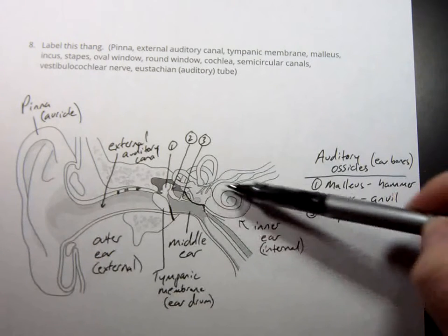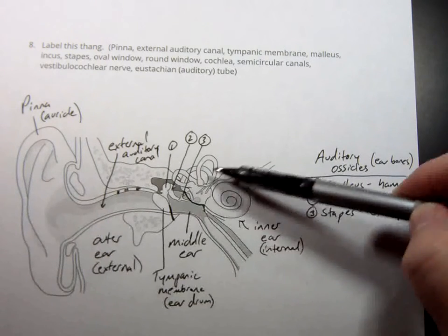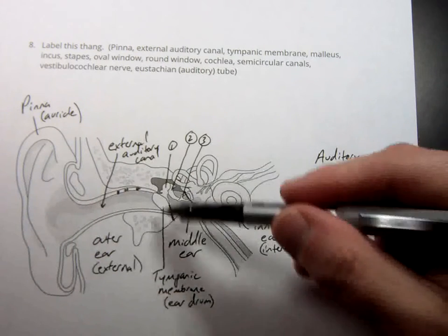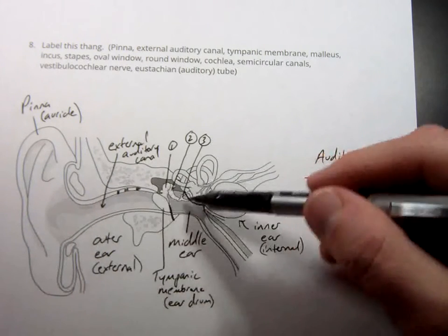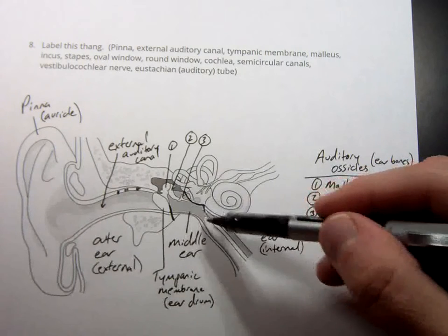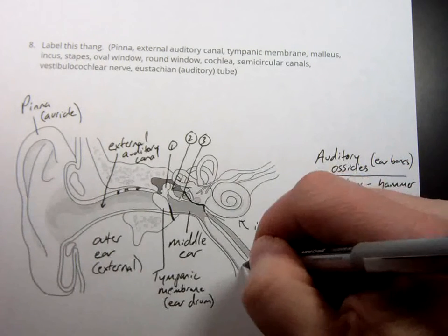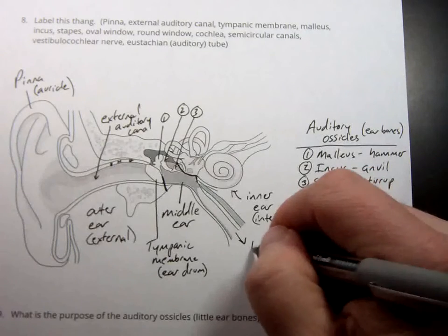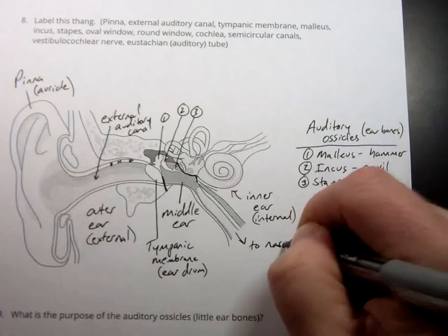And we're going to talk about some pretty complex mechanisms of how this works in our next lecture. But for our purposes today, just know that the eardrum moves and it moves these bones. But we have this tube right here. This tube is important because this tube leads out to the nasopharynx.